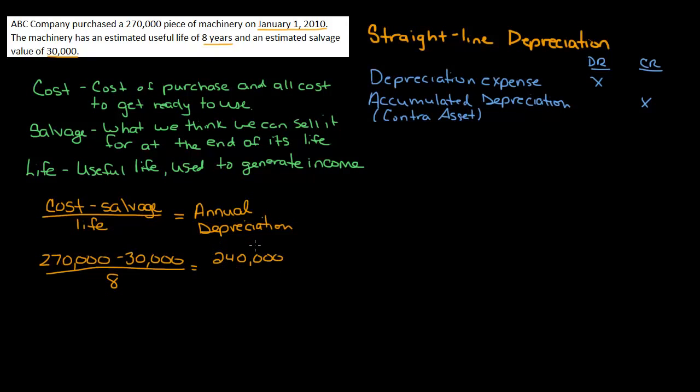So that would be 240,000. So this is the maximum amount of depreciation that we could have on the asset, because if you think about it, I can't go below $30,000 value. So 240 is the maximum amount of depreciation I can have on the asset. And I'm going to divide that evenly over eight years, which means that my annual depreciation is $30,000. That's it. So the 30,000 would be what goes in my journal entry up here.